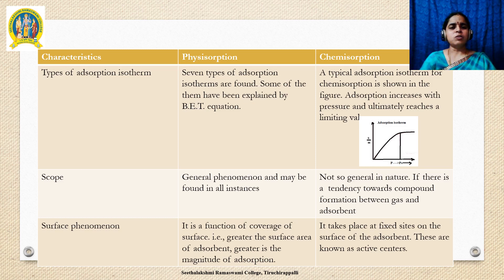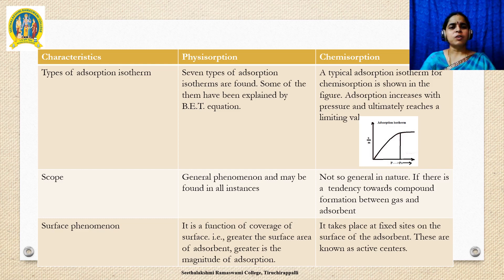Adsorption, especially physisorption, is a general phenomenon that takes place at all instances. Chemisorption occurs very rarely; it is not a general phenomenon and occurs only if compound formation between the adsorbent and adsorbate is observed. Physisorption is a function of surface area coverage — if surface area increases, physisorption also increases. Whereas in chemisorption, there are specific sites called active sites which execute the adsorption process.